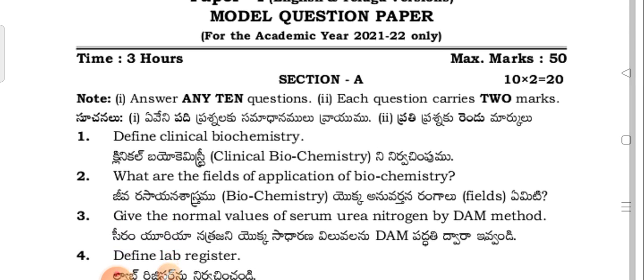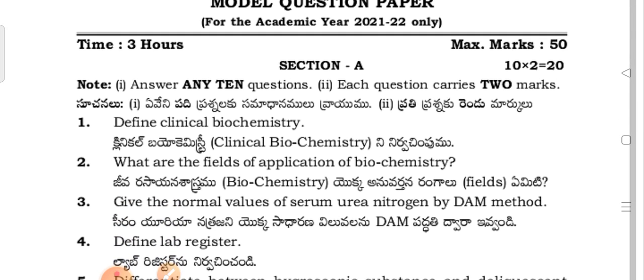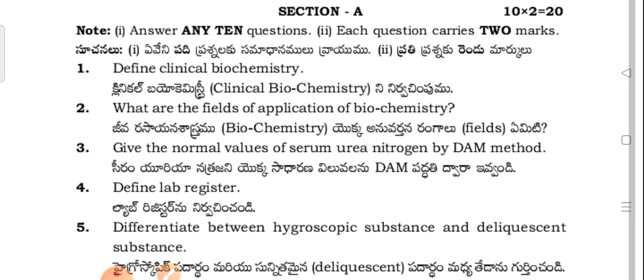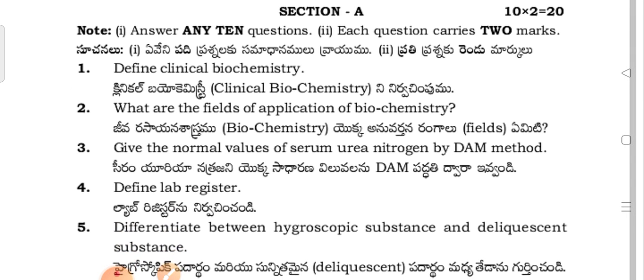So this is the Biochemistry MLT first year paper for Telangana — 100% Telangana paper. But this is also 80% applicable, so AP first-year students can also go through it.